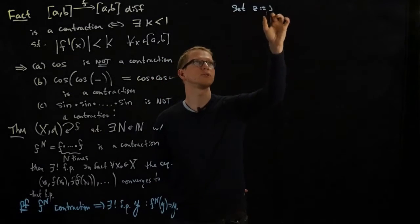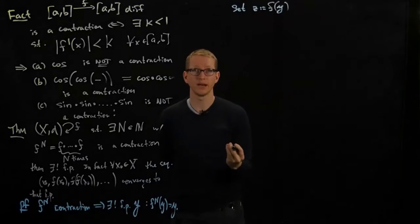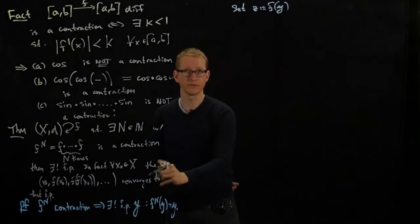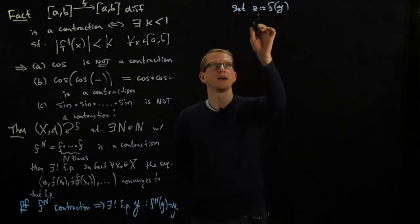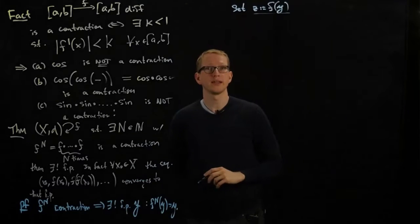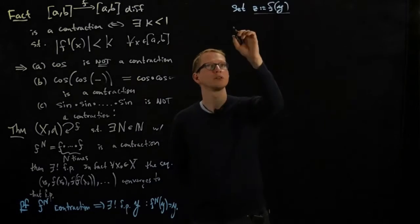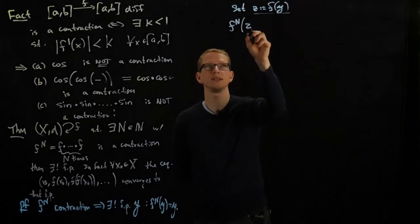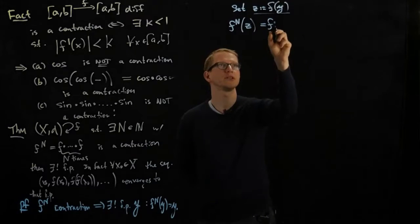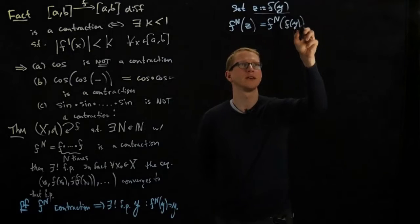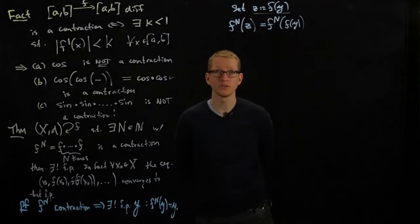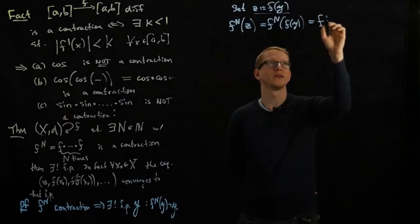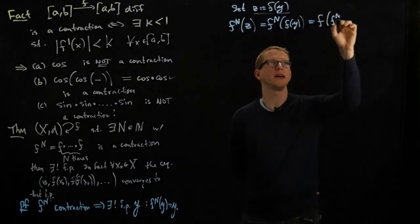Set z equal to f of y. So I'm going to take my point, which I know is fixed under the nth iterate of f, and now what we're going to do is we're going to look at this next point. So if I apply the nth iterate of f to z, what do I get? By definition, this is just f of y. And since function composition is associative, I can rewrite this as f fn y.